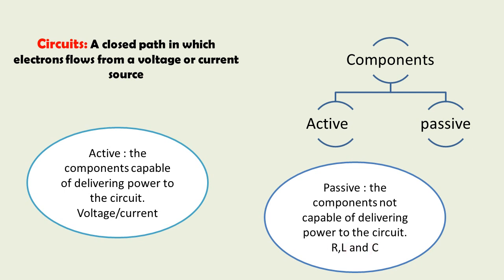We can understand this with an analogy: in a family we have a mother and father as voltage and current, and there are three children namely resistor, inductor, and capacitor. Both parents earn the money and this money is distributed among R, L, and C. That is the theory of components.